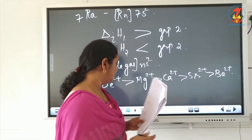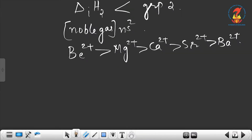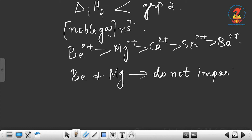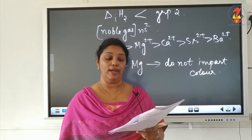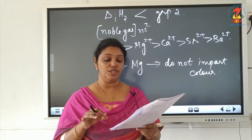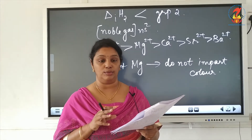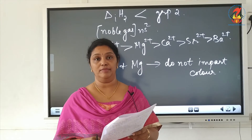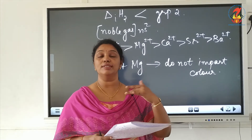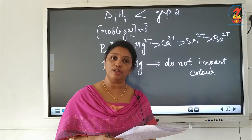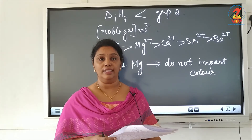Beryllium and magnesium, the first two elements, do not impart color to the flame. Beryllium and magnesium salts do not give any color to the flame because the electrons in beryllium and magnesium are too strongly bound to get excited by the flame. Color is only observed when electrons get excited to a higher energy level and return to a lower energy state.